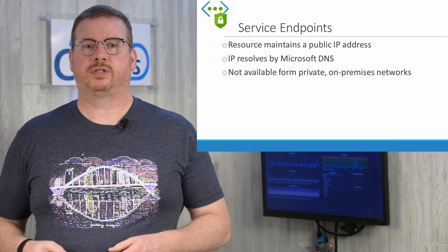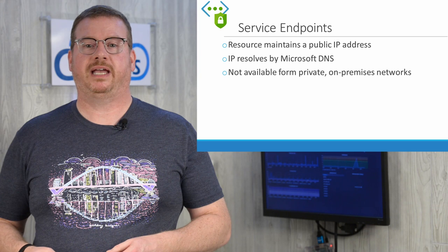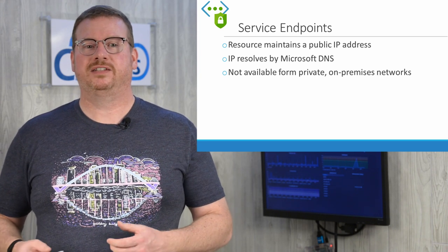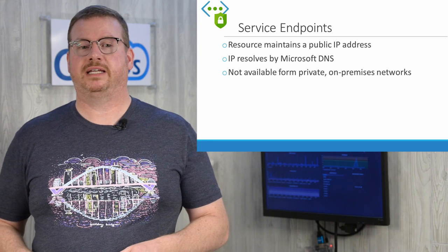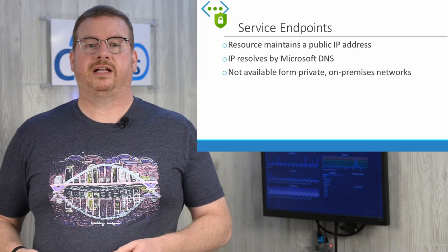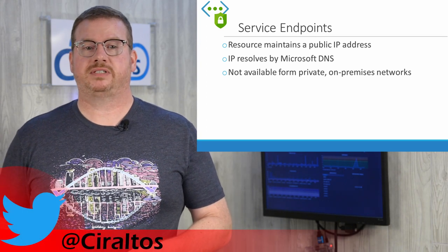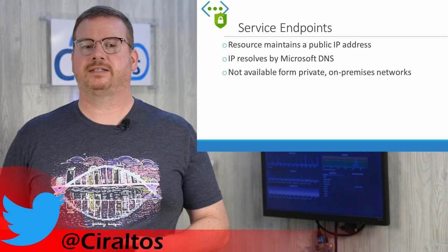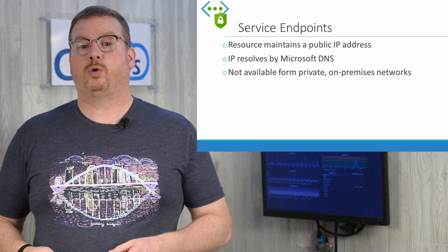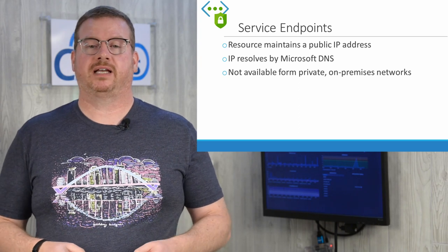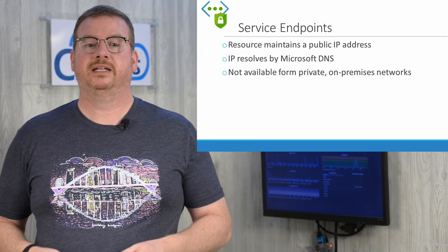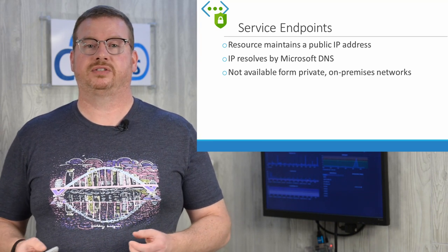Here are some key points for a service endpoint. It maintains a public IP address — the service does not get a private IP address. The service endpoint is accessible by Microsoft DNS. Because the IP address doesn't change, DNS stays the same. It's not available from private on-premises networks. For example, you may want to access a service endpoint over a site-to-site VPN with private IPs — that won't work because there is no private IP assigned to the service endpoint. You can, however, add your organization's public IP to the firewall and allow access to the resource that way.